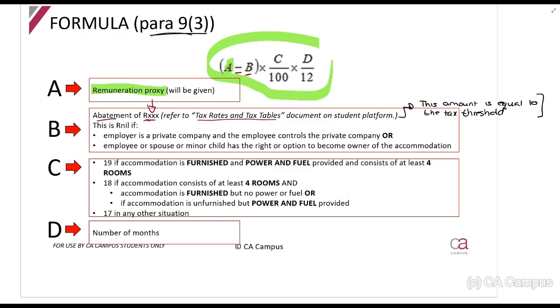C is over 100, so it's a percentage. This can be 19, 18, or 17. The higher it is, the higher the fringe benefit. Let's start with 19 - this is the highest. This is when you get everything: your employer gives you a furnished place with furniture and they pay for power and fuel - water, electricity, gas - and there's at least four rooms.